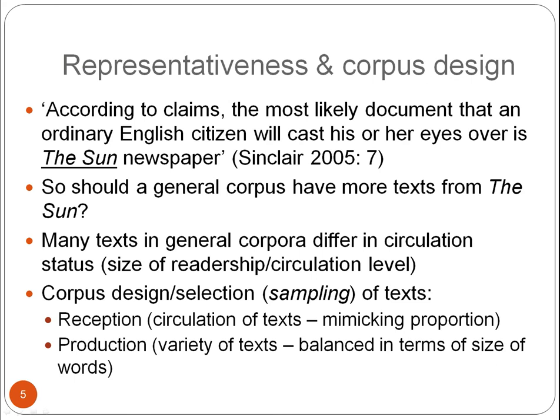One problematic issue about representativeness is how do we take into account the audience for language? For example, John Sinclair has said that the most likely document that an ordinary English citizen will cast his or her eyes over is the Sun newspaper. So the question is, should a general corpus have more texts from the Sun? The same applies to texts that differ in circulation status — they have more or fewer readers. If we take reception as a starting point, we could design a corpus that mimics the proportion of texts; a corpus for British newspapers would have more texts from the Sun to mimic what is happening in the real world. But if we take production as a starting point, we design a corpus that mimics the variety of different texts that exist, regardless of how many people consume them — including texts from all British newspapers. I'll show you two examples of corpora taking these different starting points.